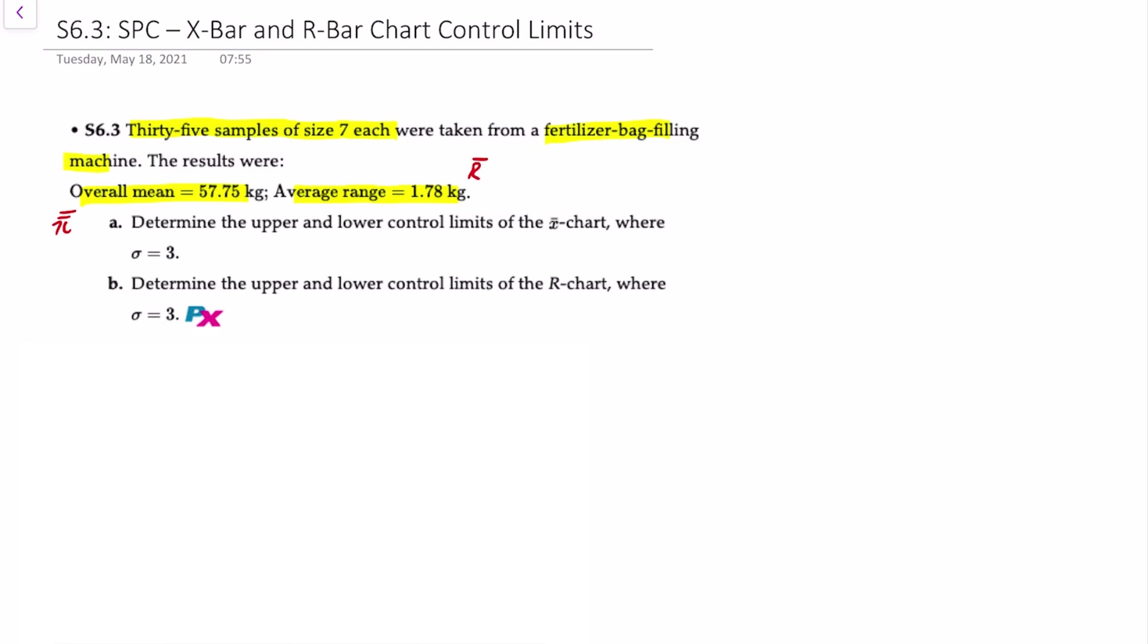Our requirements here are to determine the upper and lower control limits of both an X chart and an R chart where, and here's the problem with this question, it should not say where sigma equals 3, it should say z equals 3 because this corresponds to a 3-sigma control chart.